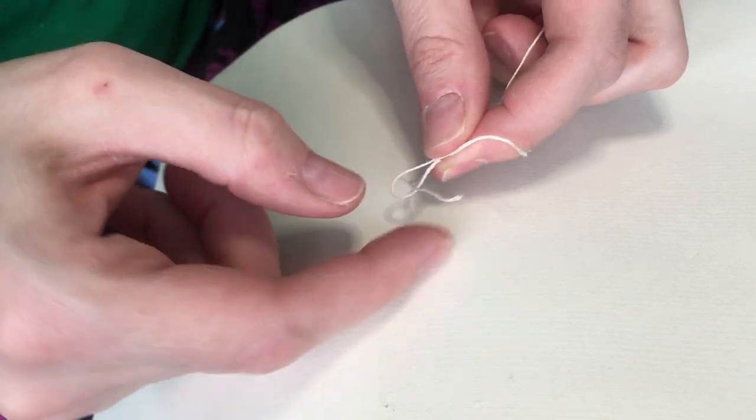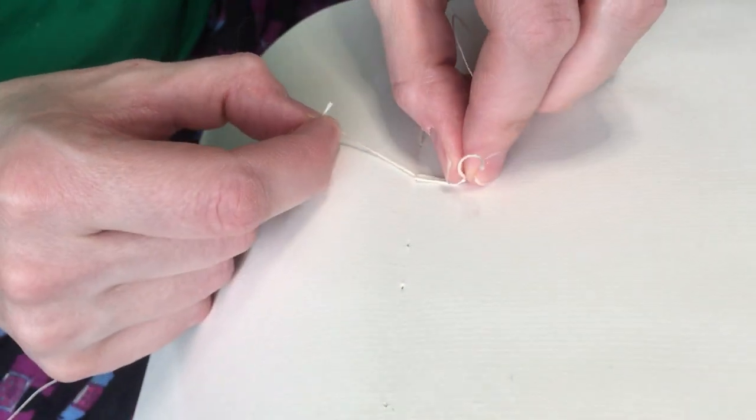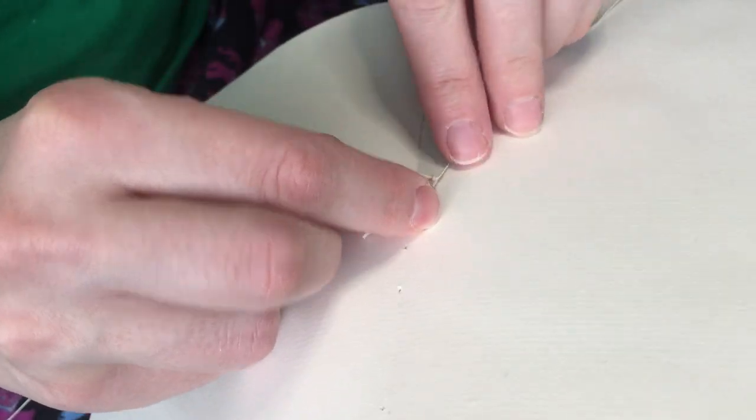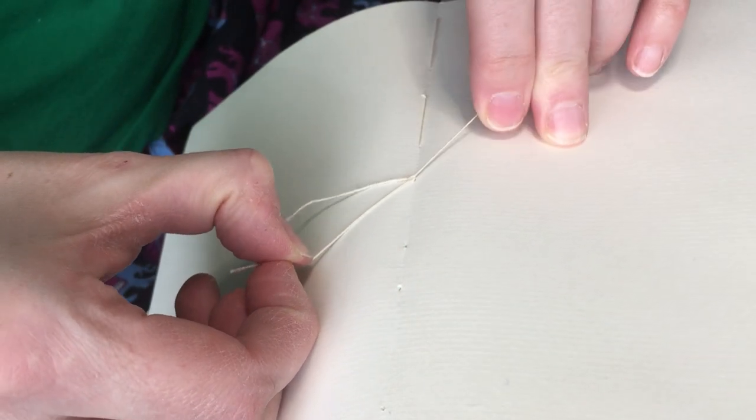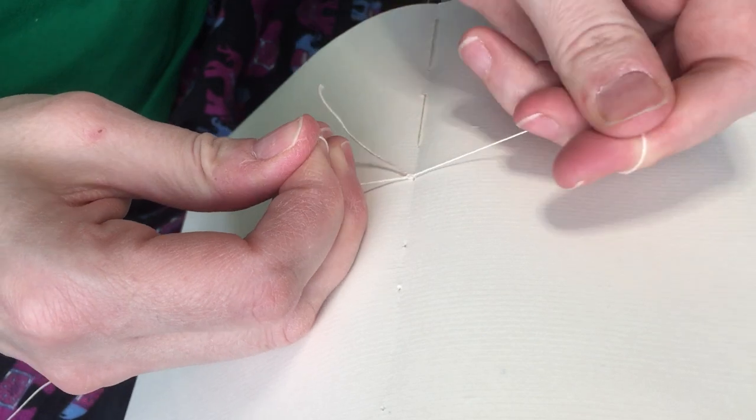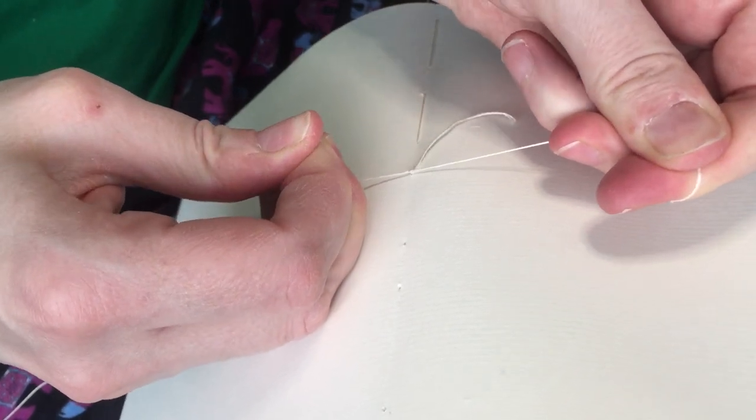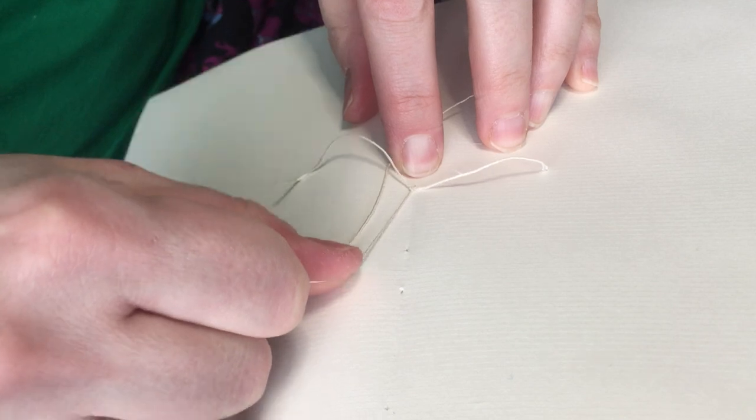So then you take this old tail, put it through, slide your hole up against the hole or wherever you want it to cinch, and then pull these two ends and you'll feel a click click right there and that's how you know that it took.